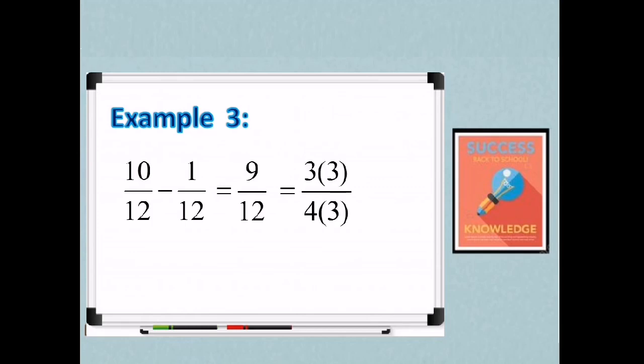and 12 as 4 times 3. So the common factor is 3. So we can cancel out 3. Therefore, our final answer is 3/4. So that's how we subtract similar fractions. So just remember the two steps.